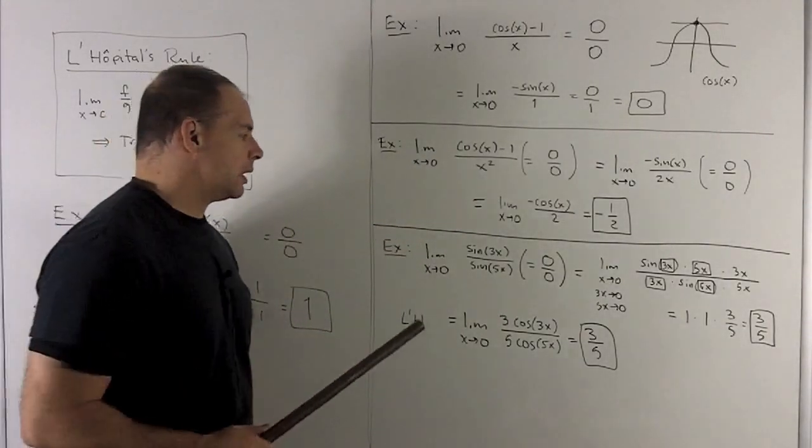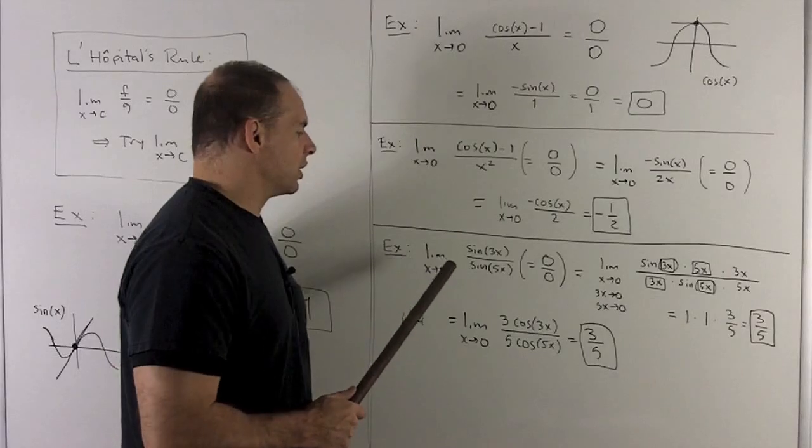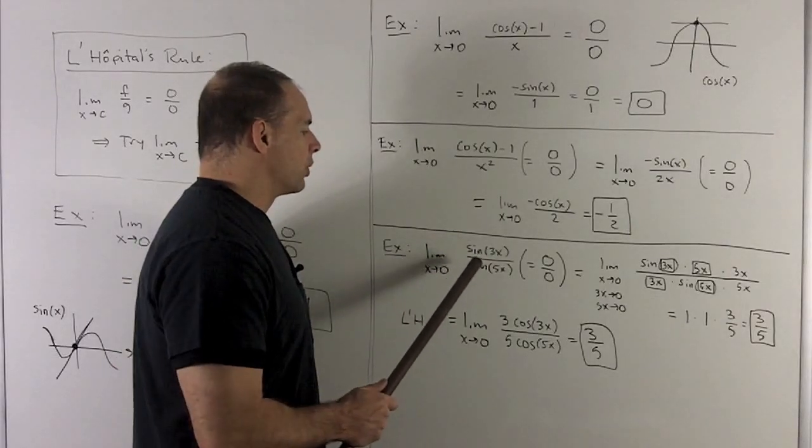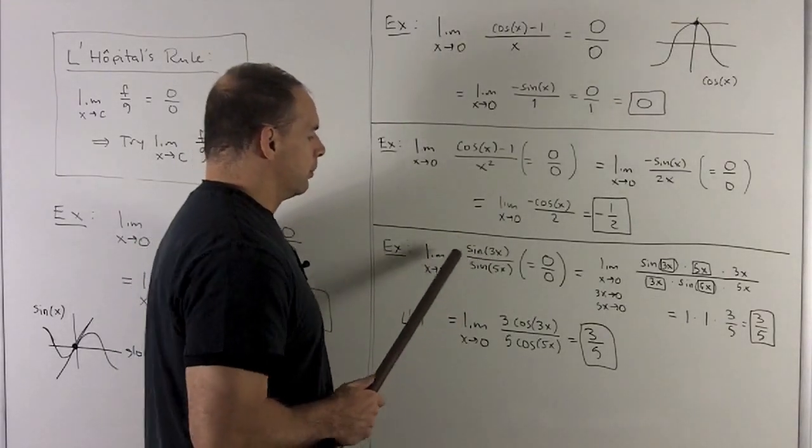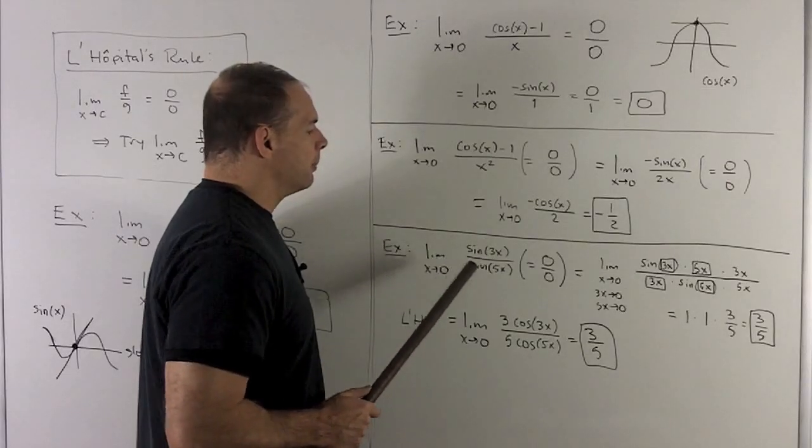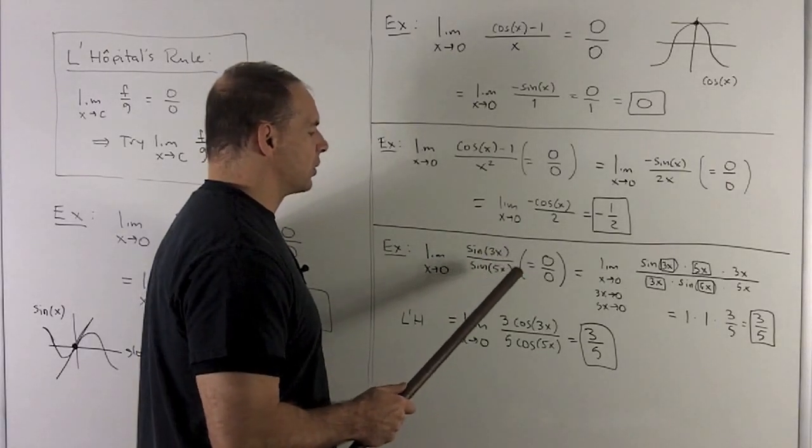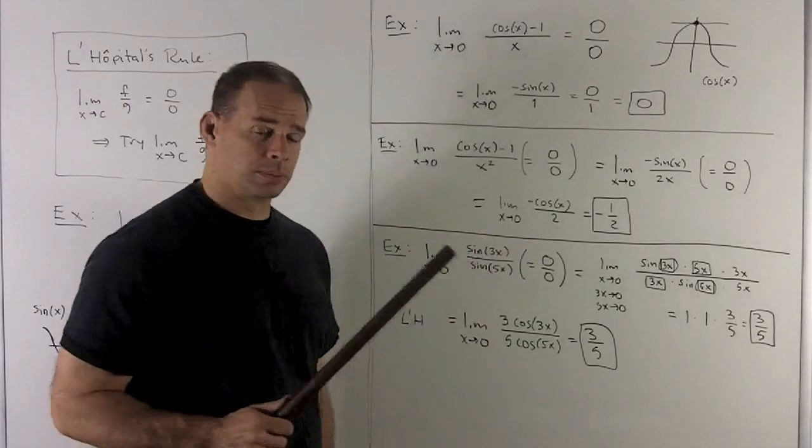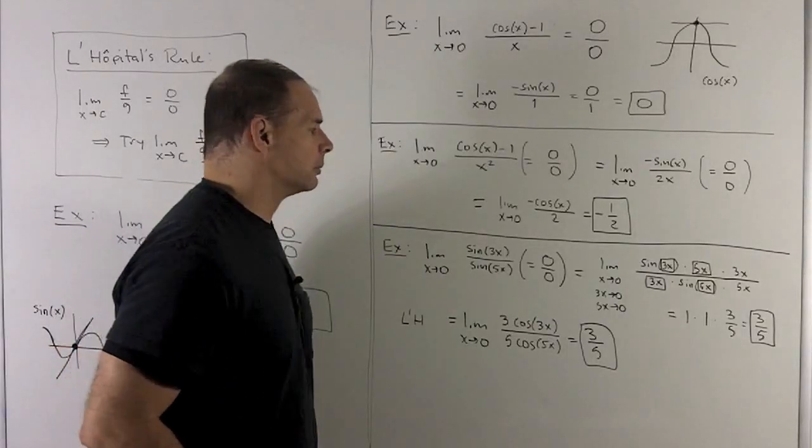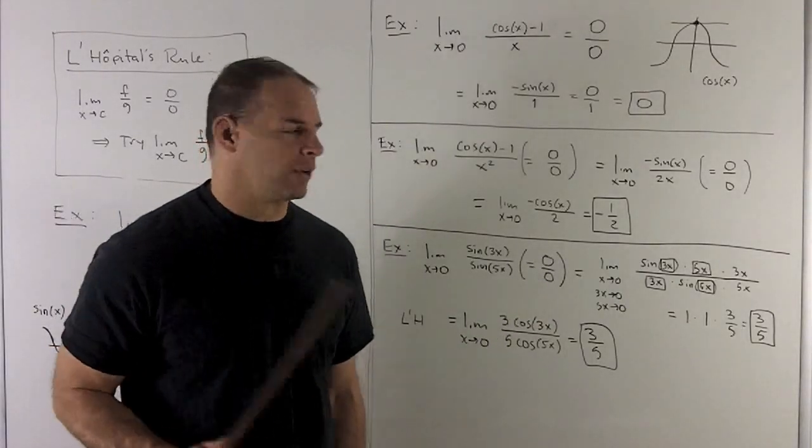For a final one, let's try limit as x goes to 0, sine of 3x over sine of 5x. Put my 0 in. We get sine of 0 over sine of 0, which is 0 over 0. So we need to do more work. Now note, let's do it the traditional way first.